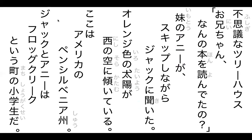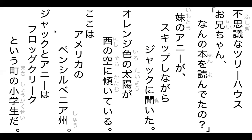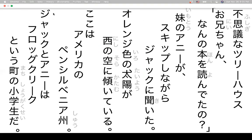So while skipping she asked him what book he was reading. The next part: オレンジ いろの たいよう. The sun is orange. にしの そらに かたむいている — the sun is setting toward the western sky. Also, note that sometimes when reading you'll drop the の, saying にし そら or いもうと あにい rather than the full form.